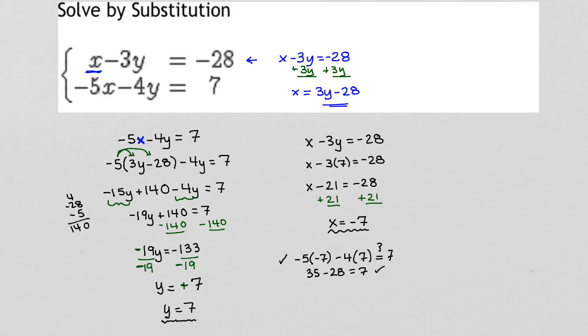Let's check it in the first equation. x, which is negative 7, minus 3 times y, which is 7. Does that equal negative 28? On the left, I have negative 7 minus 21. And in fact, that is equal to negative 28. Wonderful. It works in both equations. That means the solution to this equation is a single point. It is the point negative 7 for x, positive 7 for y.